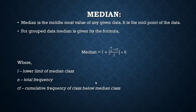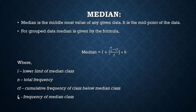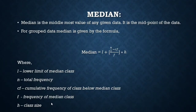Unlike mode calculation where we used f₀ (frequency of the preceding class), in median we use something called cumulative frequency. f is the frequency of the median class and h is the class size. We will apply these terms when solving the upcoming problems.